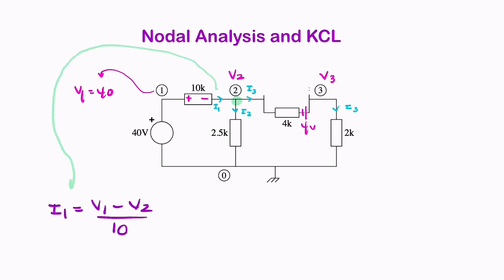Let's do I2. I2 is this current here. And again, you want the potential difference, this minus this, divided by the resistance. So I'll write it as I2 equals V2 minus 0 divided by 2.5. That's my second equation.